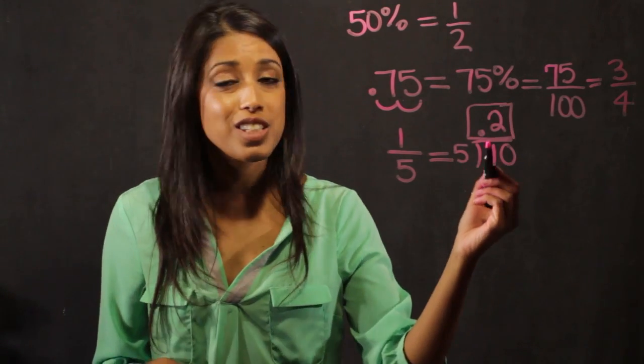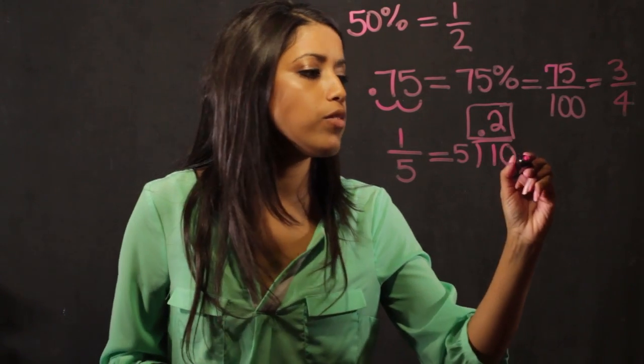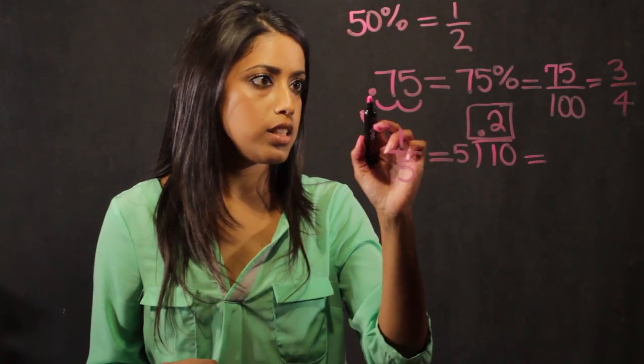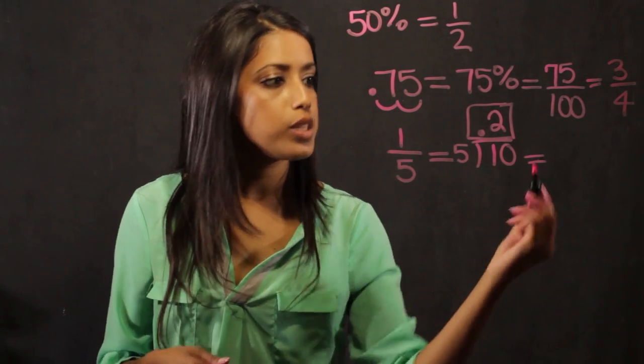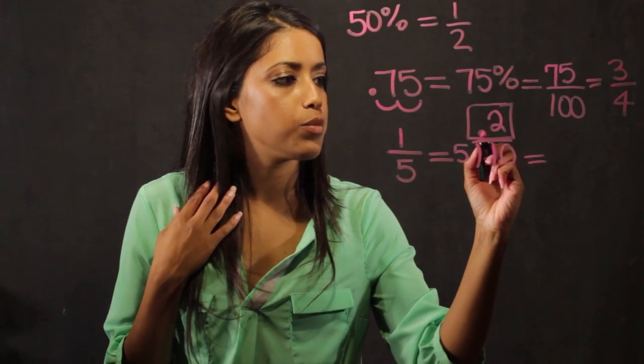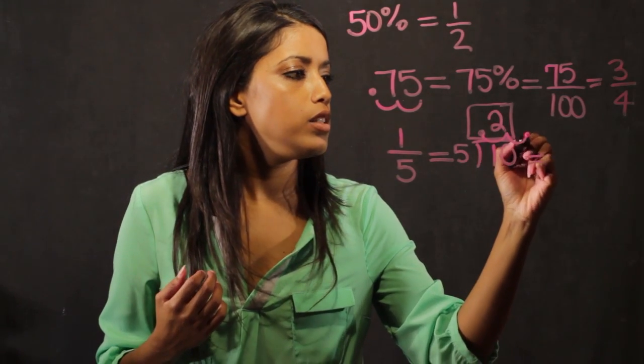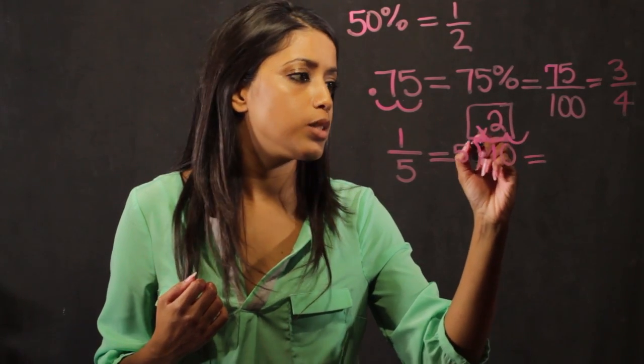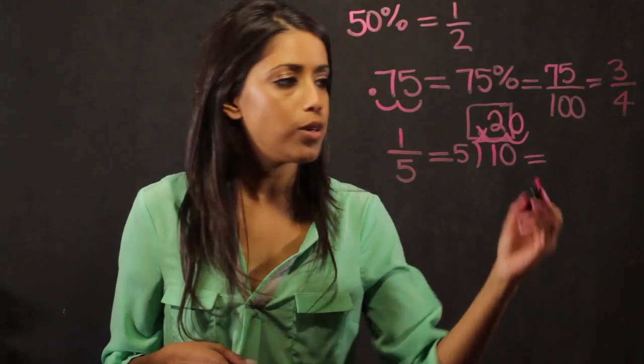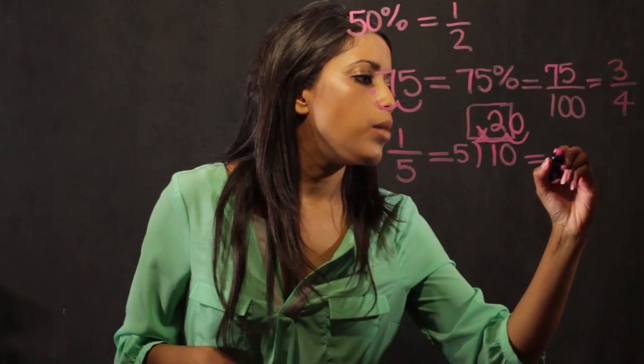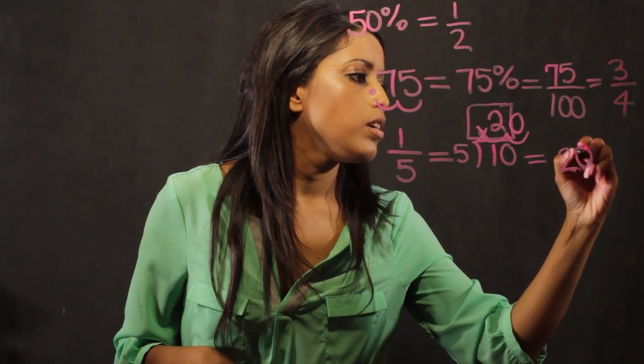Now it's time to convert this to a percentage. The way we convert from a decimal to a percentage is the same way we did up here where we move that decimal place 2 times. So I'm going to take the decimal and I'm going to move it 1, 2. I'm going to drop my decimal and add the percent sign and fill in any spots with a 0. So this is going to become 20%.